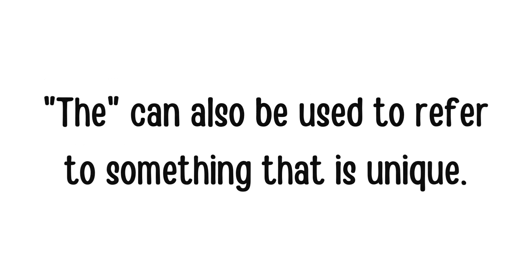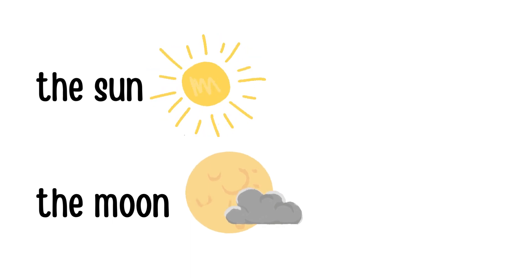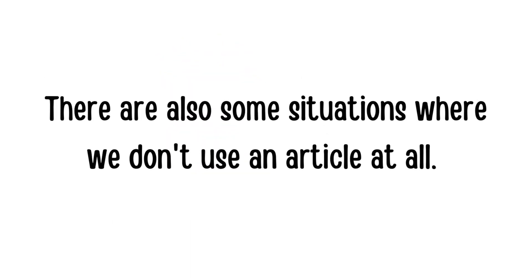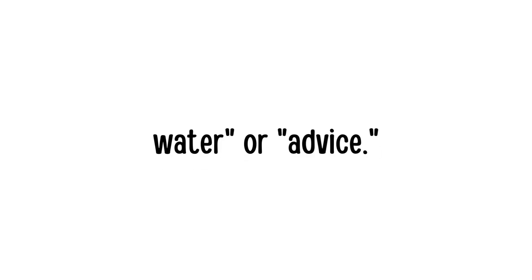The can also be used to refer to something that is unique, like the sun or the moon. There are also some situations where we don't use an article at all. For example, we don't use an article when talking about things in general, like books are great. We also don't use an article when referring to uncountable nouns, like water or advice.